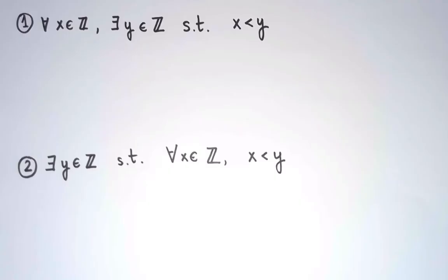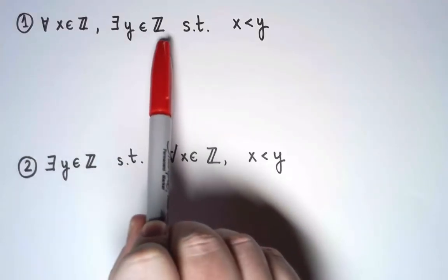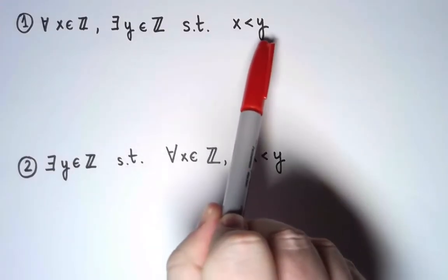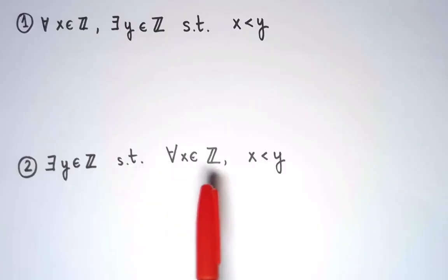Let's look at these two statements. The first one says, for every integer x, there exists an integer y such that x is less than y. And the second says, there exists an integer y such that for every integer x, x is less than y.